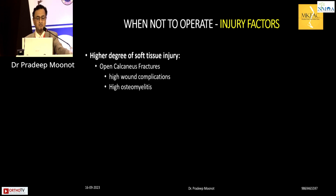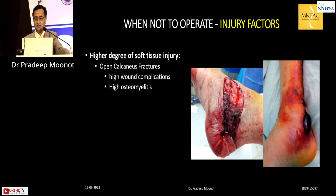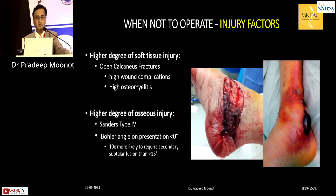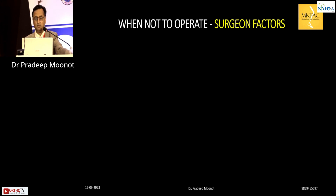Injury factors that argue against surgery include a high degree of soft tissue injury and open calcaneal fractures — these should not be approached with open reduction initially; you may stabilize with wires but nothing more. Additionally, a very bad Sanders 4 with Böhler's angle near 0 degrees has a higher chance of requiring secondary subtalar fusion, so operative fixation may not be the right choice.